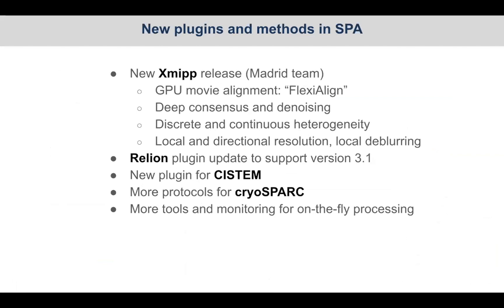It hasn't stopped there — different teams continue to add new programs. In Madrid, for example, XMIP is being developed as a software package with new methods, a lot of research in GPU computing, and new programs using neural networks and deep learning for tools like local resolution and many other programs. Together with the Scipion release, there will be an XMIP release. We are also working on the Scipion-Cistem plugin, and there is a new plugin for Cistem — before there were separate programs like CTFFind and FreAlign, but now they are grouped in Cistem with a plugin for that.